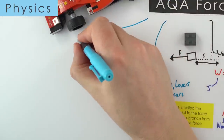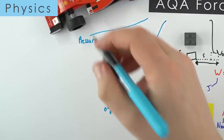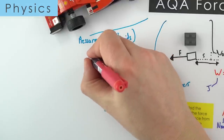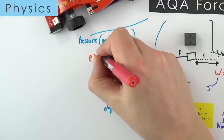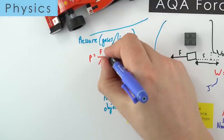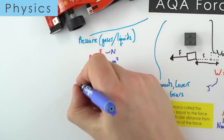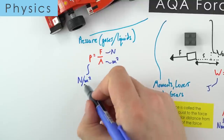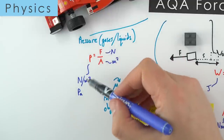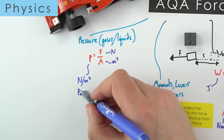We also need to consider pressure in fluids — gases or liquids. To calculate pressure at the surface, pressure (p) equals force per unit area. Force is in Newtons, area in square metres, so pressure is in Newtons per square metre. We can also use the unit Pascal (Pa). Atmospheric pressure — the pressure of the air around us — is about 101 kilopascals, so pressure values are often very large numbers.